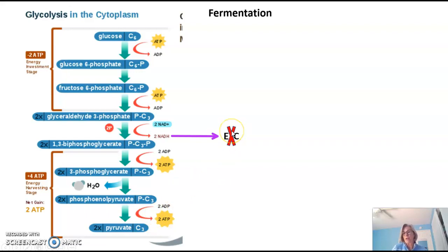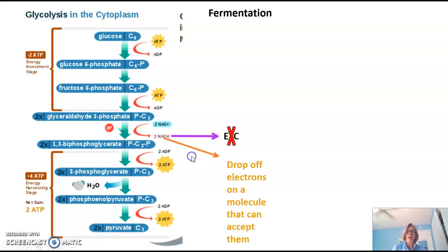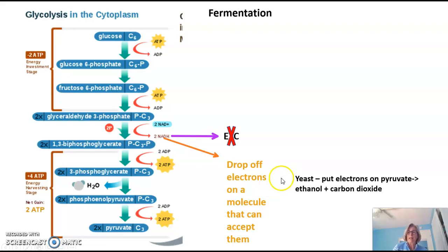The electron transport chain is not going to be functioning without oxygen, so that is simply not an option. But some cells have found a way to drop their electrons from NADH off onto a different molecule that can accept them — not the electron transport chain. The first example is yeast. Yeast can take the electrons on NADH and drop them off on pyruvate. That forms, in a series of reactions, ethanol and carbon dioxide as waste products. But importantly, that allows the cell to regenerate NAD+.